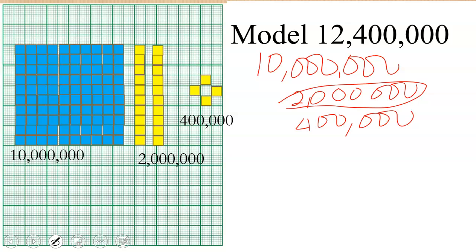So all put together we have 12 million 400,000. So if you are asked to model 12 million using your graph or any square paper that you can think of, or grid paper, this is how you can model 12 million 400,000.